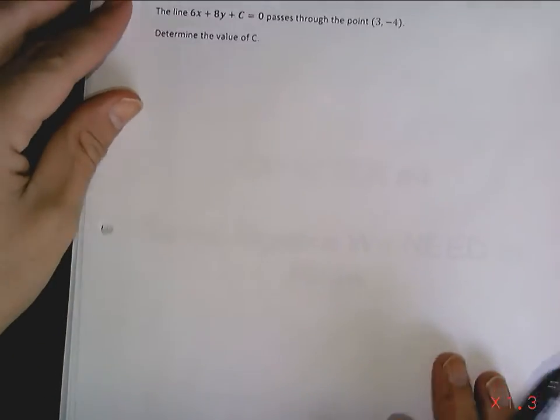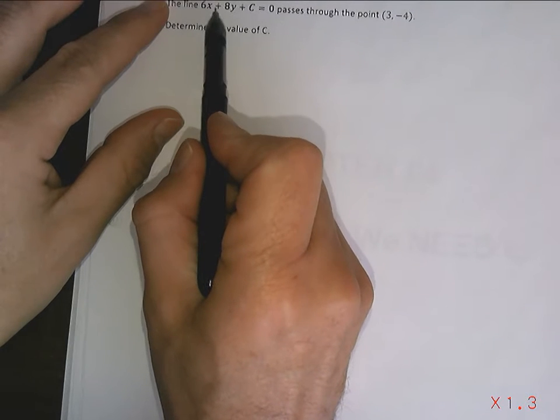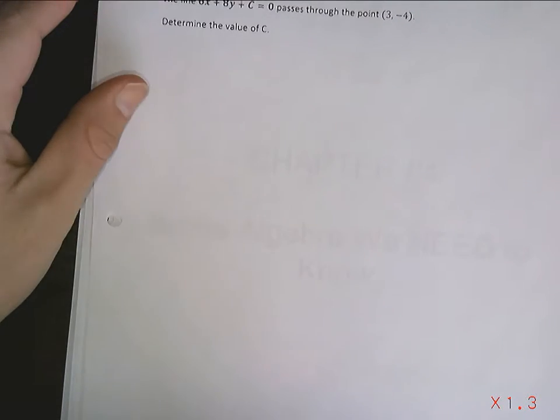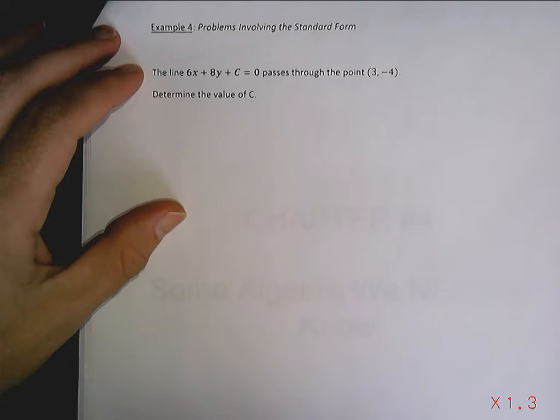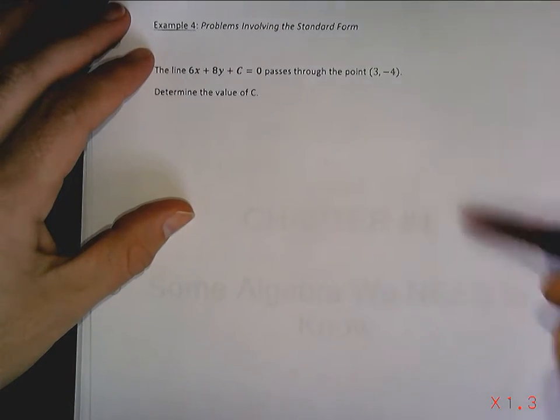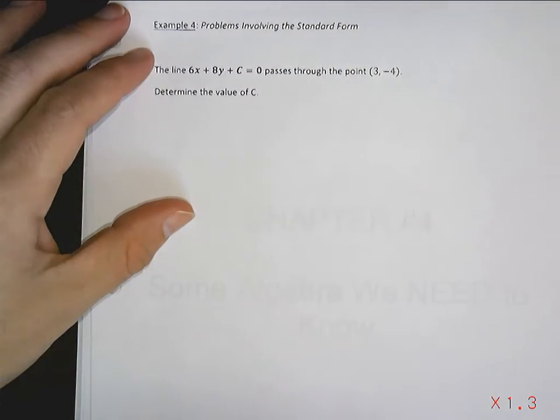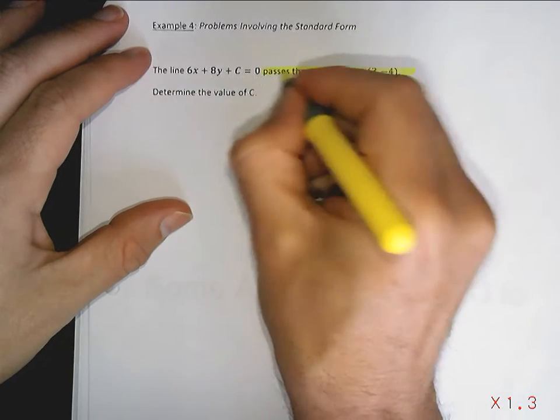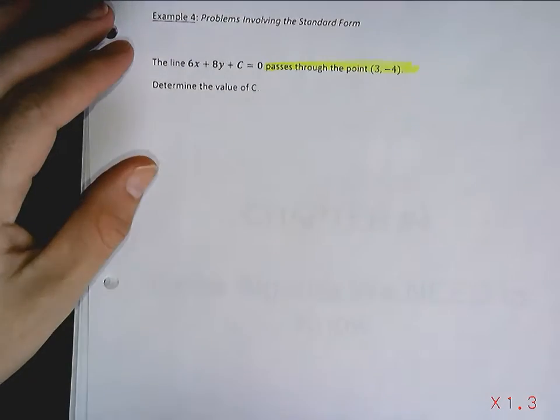Alright, example 4. The line 6x plus 8y plus c equals 0 is going to pass through this point. Determine the value of c.